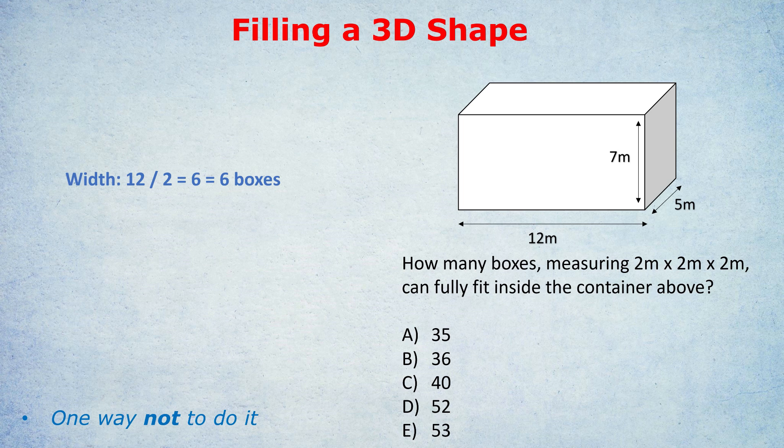Now hopefully it makes sense to you that if our box measures 2x2x2, we could fit 6 of those boxes in that dimension. And if you can't visualize that, let me show you. 1, 2, 3, 4, 5, 6 boxes, each measuring 2 meters, could fit inside that 12 meter width. In other words, 12 divided by 2 is 6, so we get 6 boxes going width-wise.